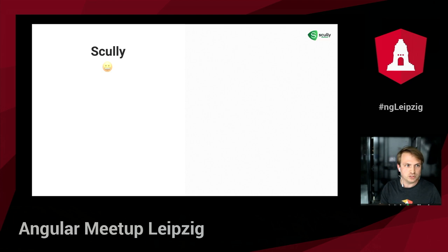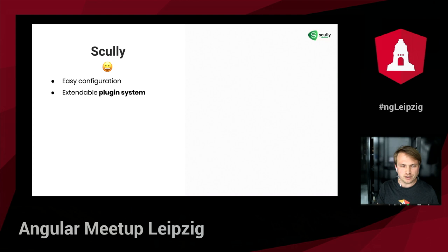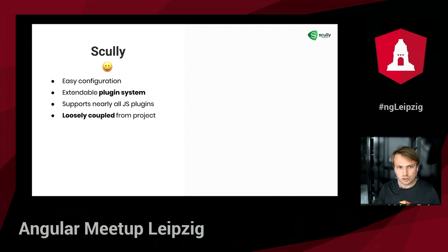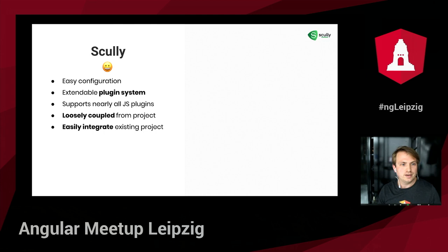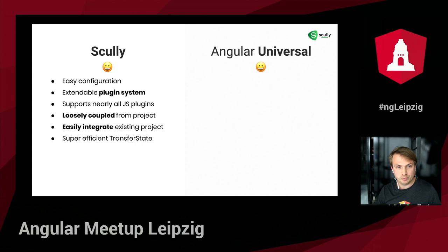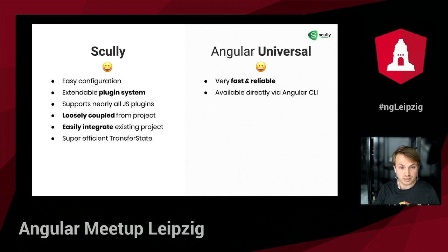Let's compare the good and less good points of Scully and Universal. The good parts of Scully: it allows for easy configuration, it has an extendable plugin system, you can use nearly all JavaScript plugins available on the internet, and Scully is loosely coupled from your project — it's not even imported or referenced in the `angular.json` file — meaning you can easily integrate it into any existing project without even needing the Angular CLI. It also uses a super efficient transfer state to optimize client-side navigation. On the Universal side, Universal can be very fast and reliable because it uses a super fast DOM implementation at the Node.js level.